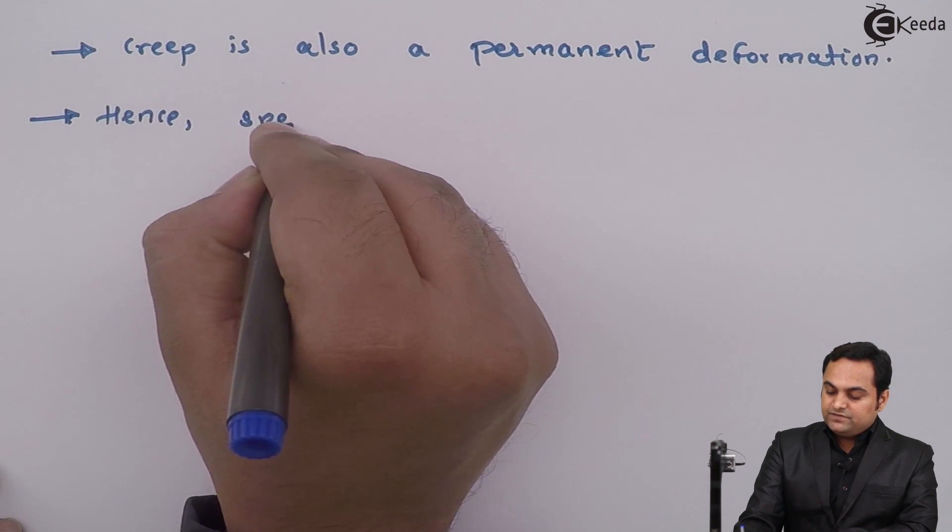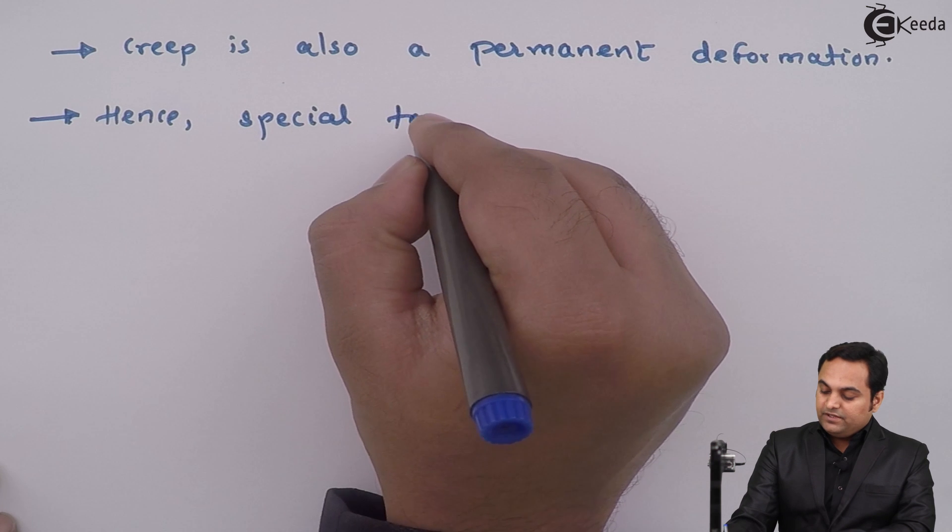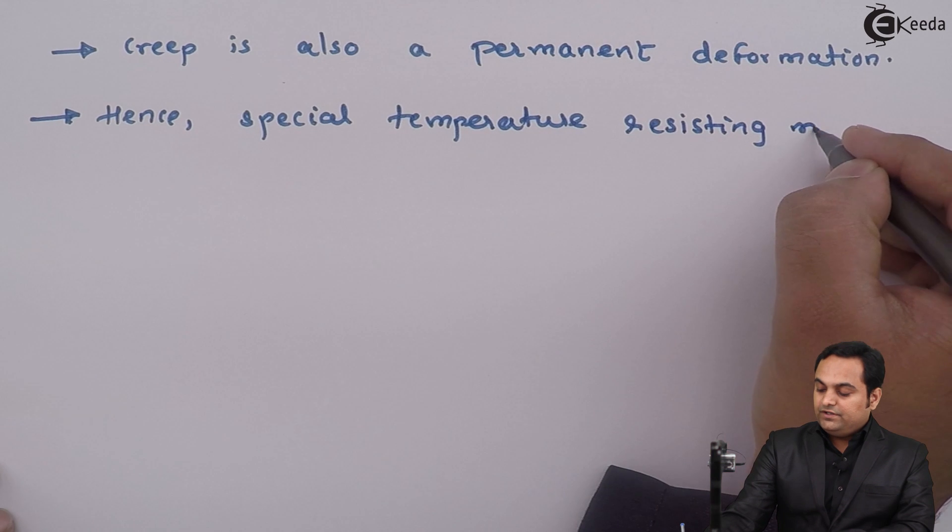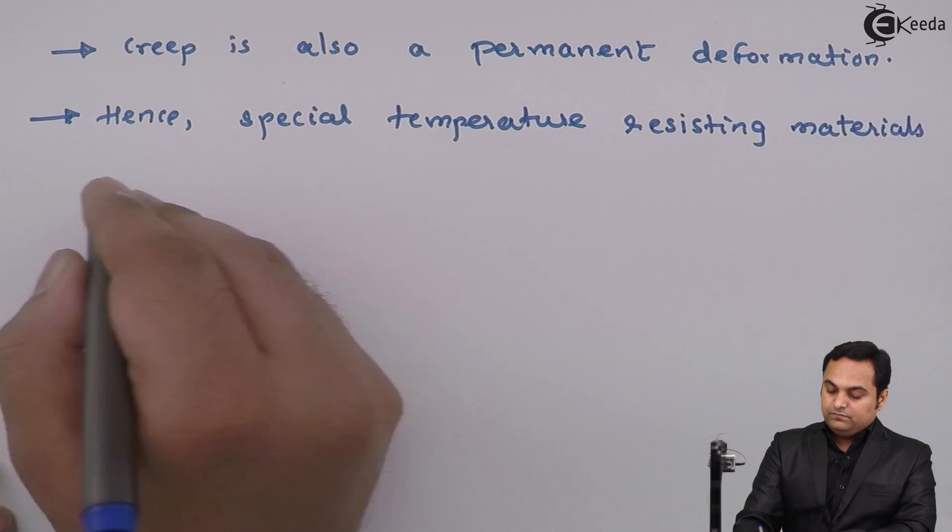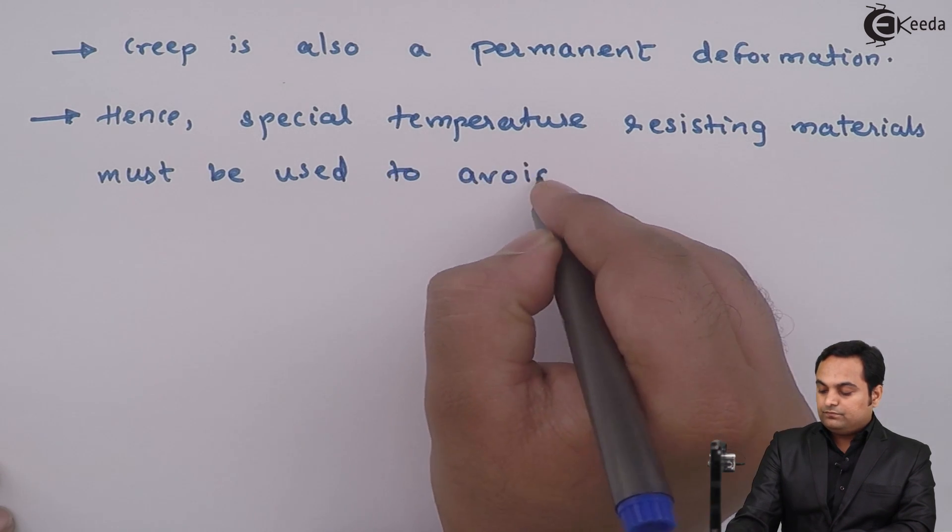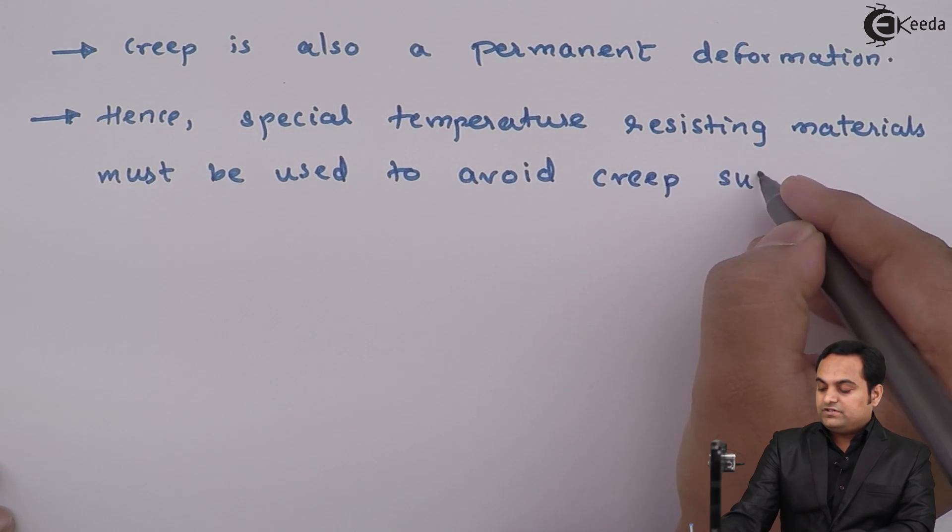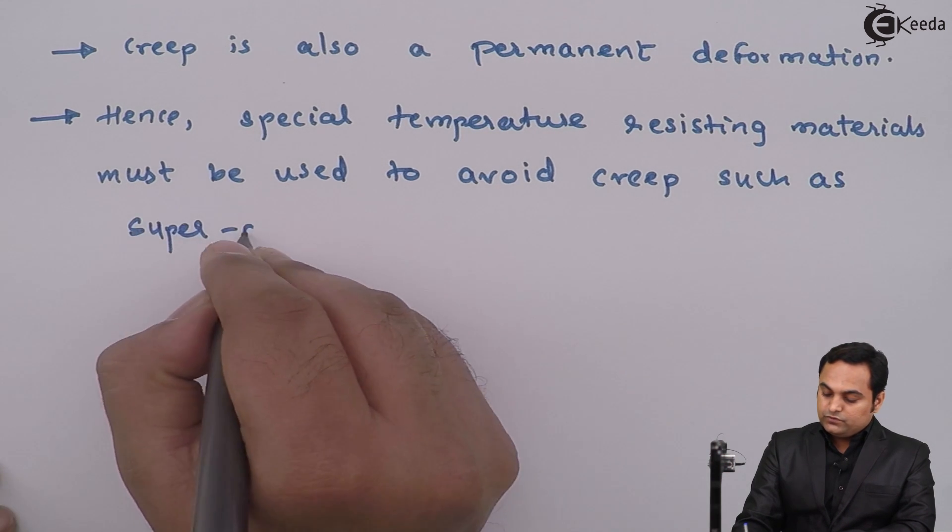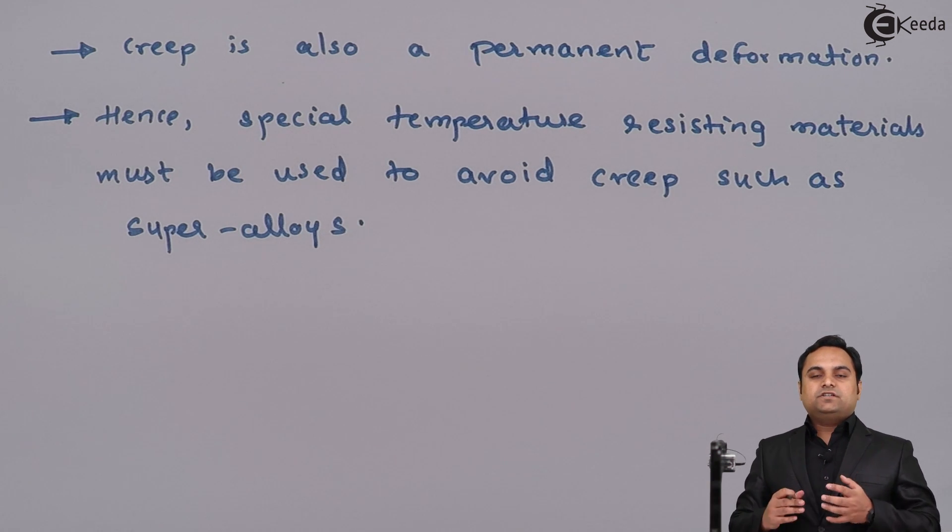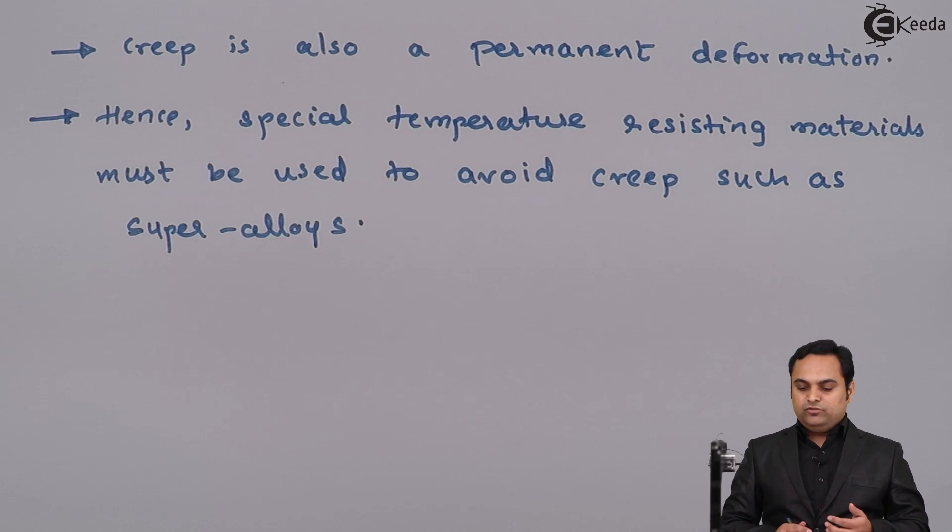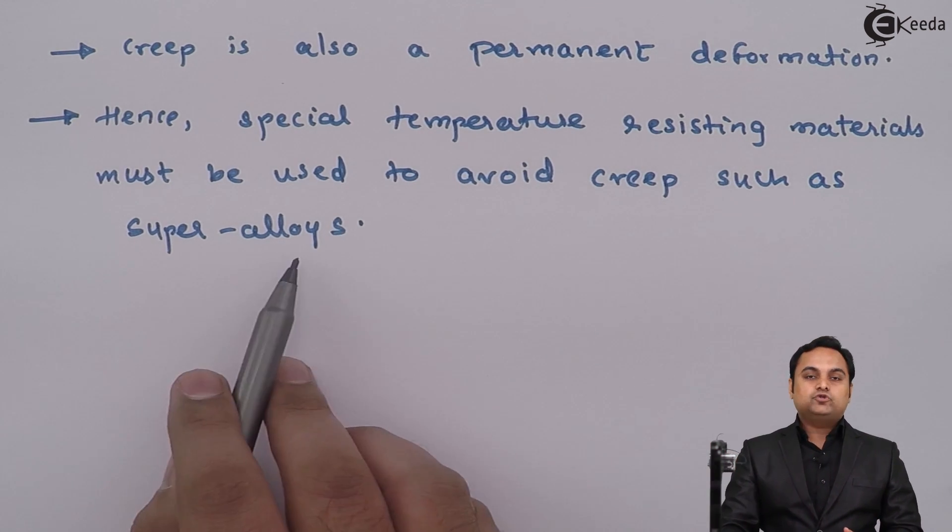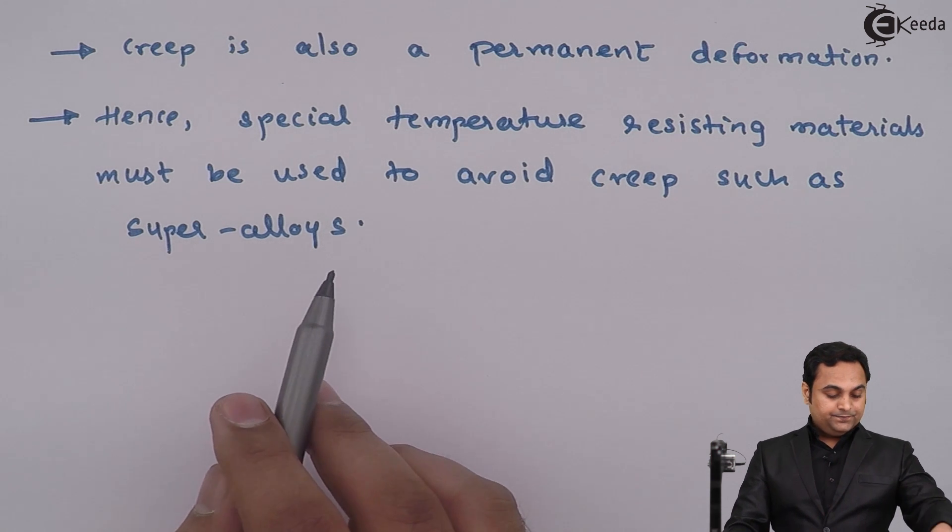Hence, special temperature-resisting materials must be used to avoid creep, such as super alloys. So if we want to avoid creep, then we have to use such materials which can resist high amount of temperatures, and the high amount of temperatures can be resisted by super alloys.